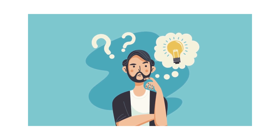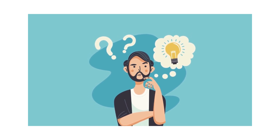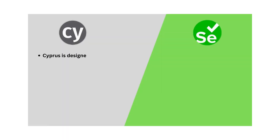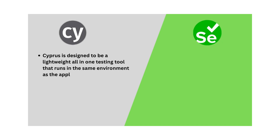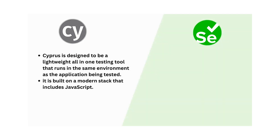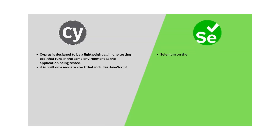Let's start our comparison with architecture. The architecture of Cypress and Selenium are quite different as they were designed to solve different problems and address different use cases. Cypress is designed to be a lightweight all-in-one testing tool that runs in the same environment as the application being tested. It is built on a modern stack that includes JavaScript, Electron, and Chrome DevTools, and it runs tests in the browser using a single command line interface.